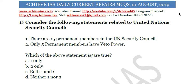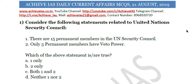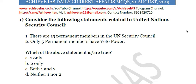Consider the following statements related to the United Nations Security Council. First, there are 15 permanent members in the UN Security Council. Second, only five permanent members have veto power. The first statement is incorrect — there are not 15 permanent members in UNSC, but five permanent members and 10 non-permanent members. These five permanent members enjoy veto power, so only the second statement is correct. The answer is B.